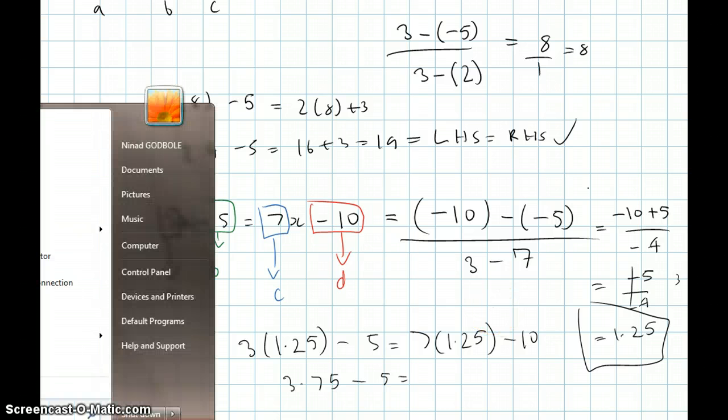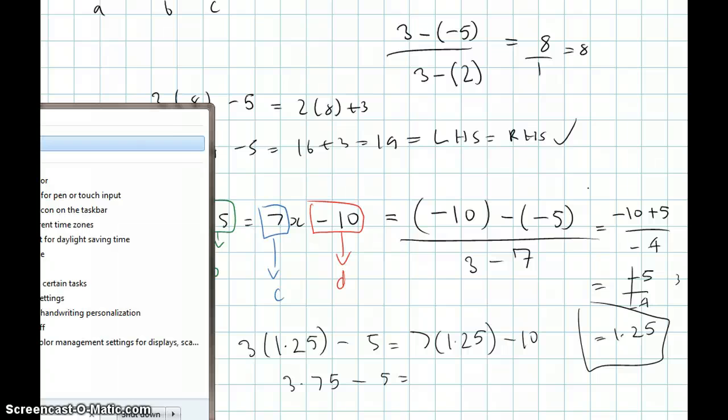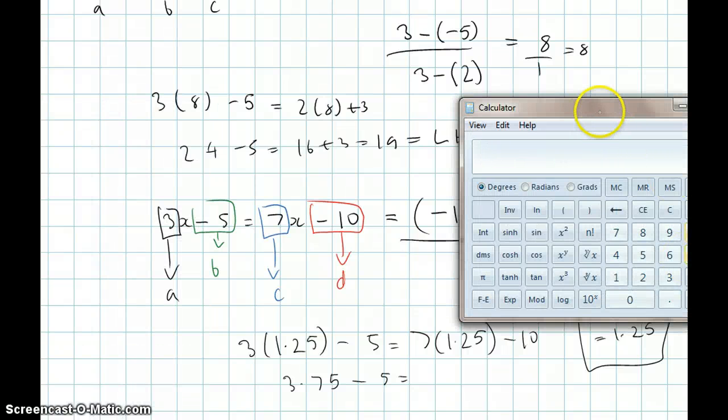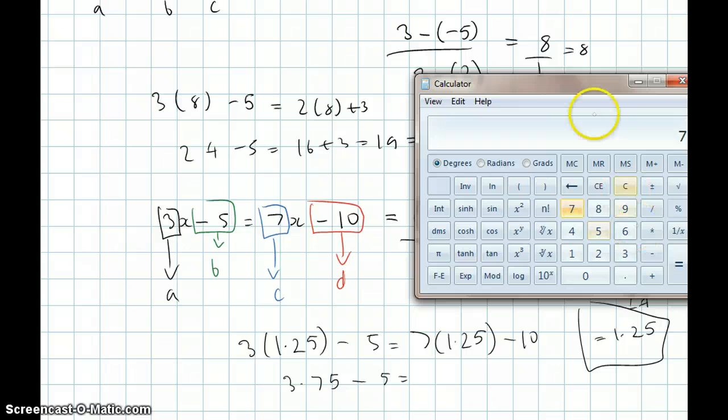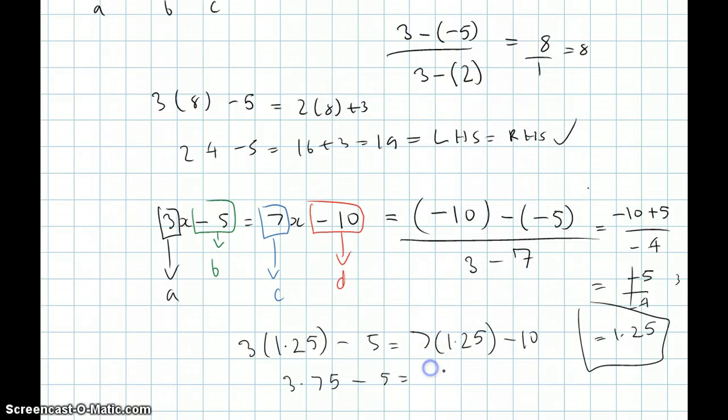Let me just take out the calculator here guys, I don't want to make a mistake. Okay, so we have our calculator. 7 times 1.25, 8.75 minus 10. Okay, so that would be minus 1.25, and this would also be minus 1.25. So it's proven, LHS equals RHS.